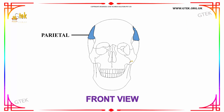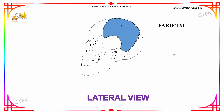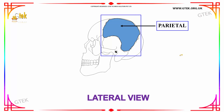Next we have the front view of the parietal bone of the human skull. There are two parietal bones, as you can see on either side of the human skull. The diagram shows the lateral view of the human skull showing the parietal bone. Since there are two parietal bones on either side, the lateral view shows the exact parietal bone on one side.